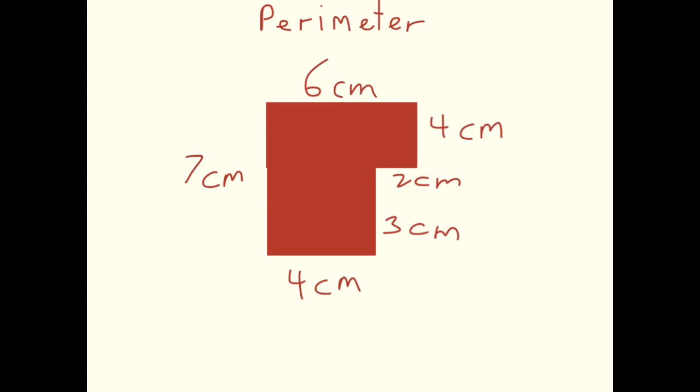It's basically made up of different rectangles and squares. To calculate the perimeter of a rectilinear shape, it's the same method as finding the perimeter of a regular square or rectangle.